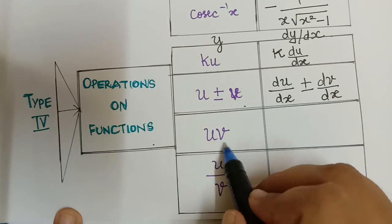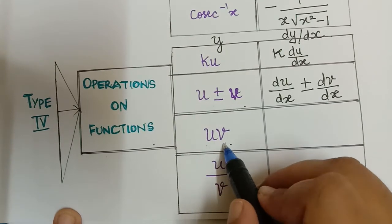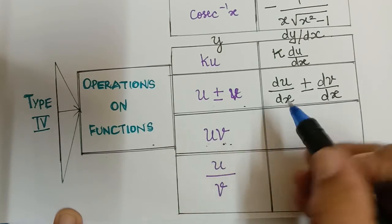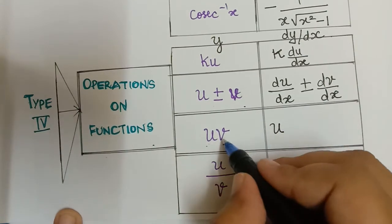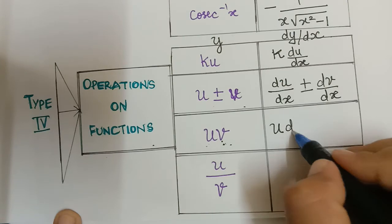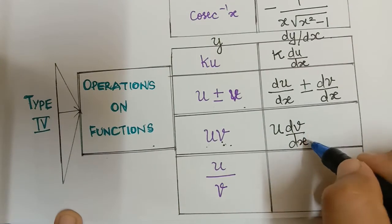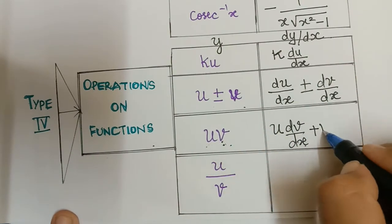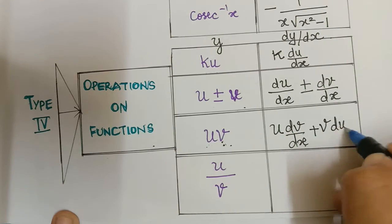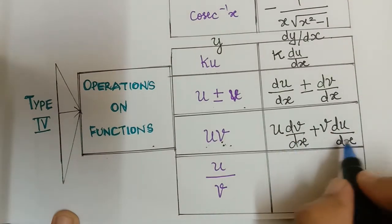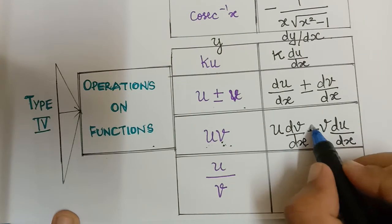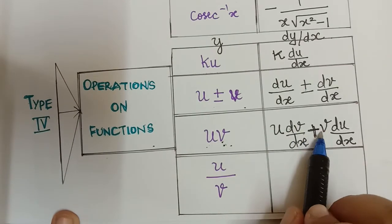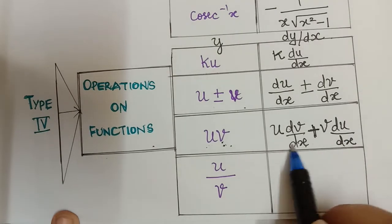When two functions are in multiplication — u multiplied by v — we must differentiate both functions with respect to x. First keep u as it is and differentiate v to get dv/dx, then add v as it is multiplied by du/dx. So the result is u·(dv/dx) + v·(du/dx). You can also do it vice versa since the operation between them is addition.